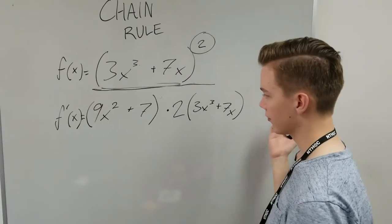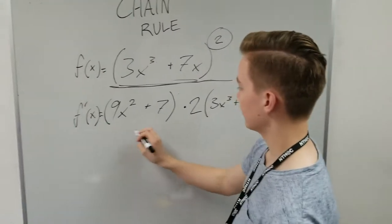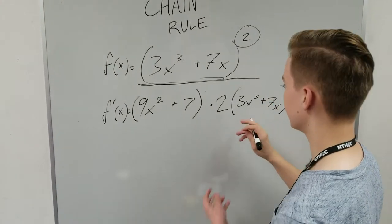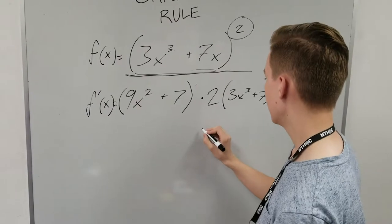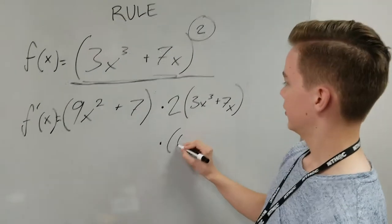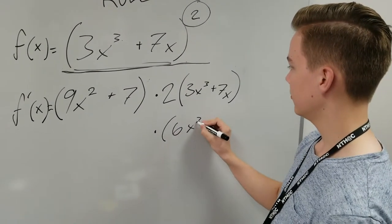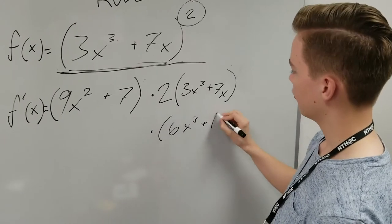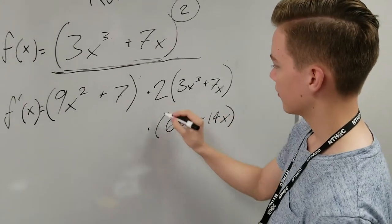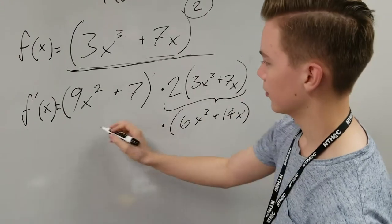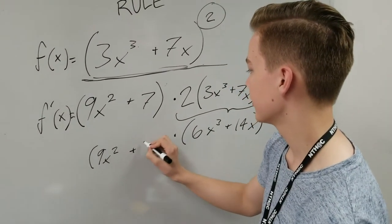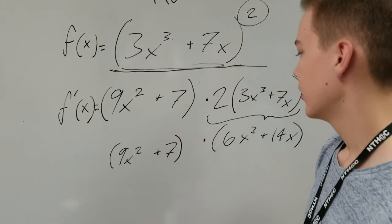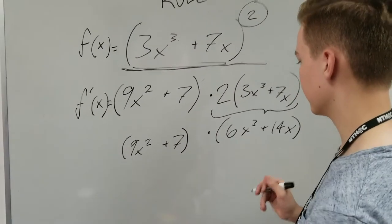We're going to first start off by multiplying this 2 into the parentheses. So, this will give us 6x cubed plus 14x in this part. And then this part will stay the same, 9x squared plus 7. And now we will just multiply these 2 together.